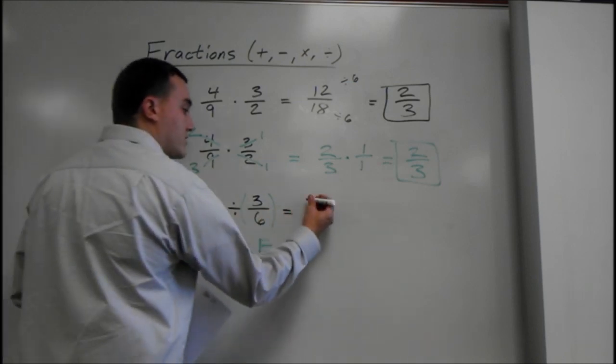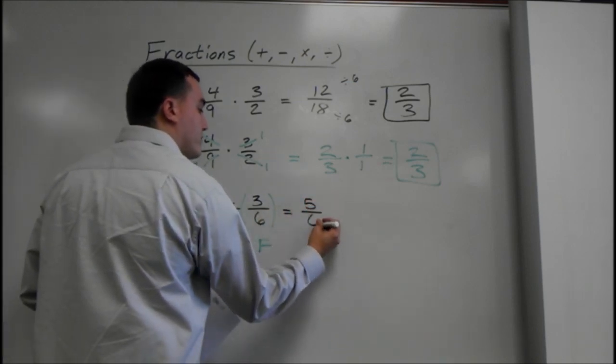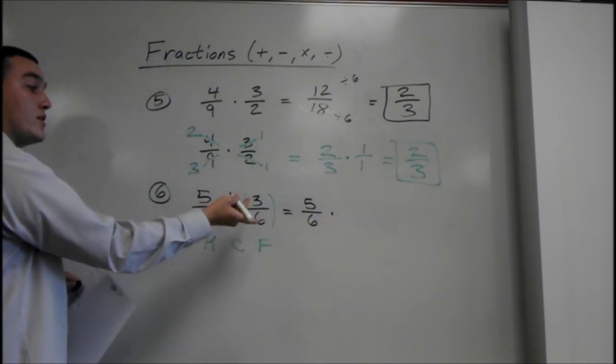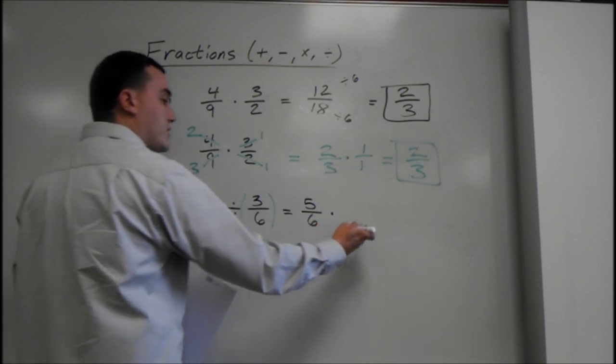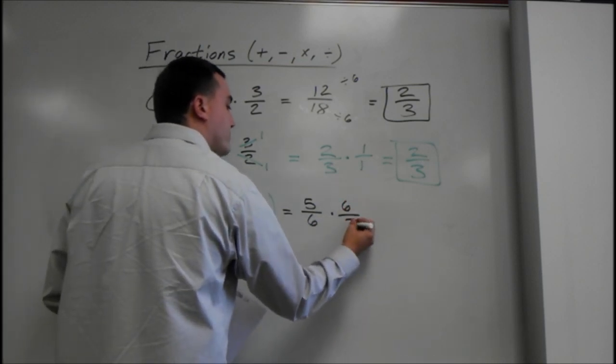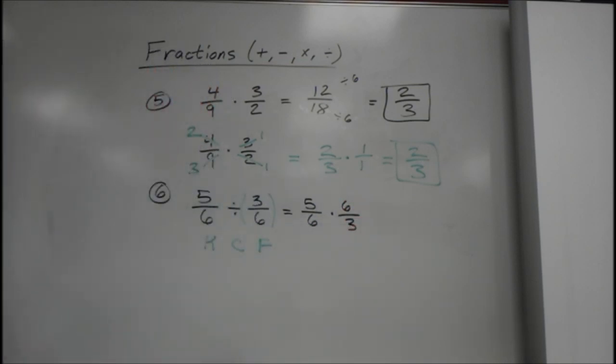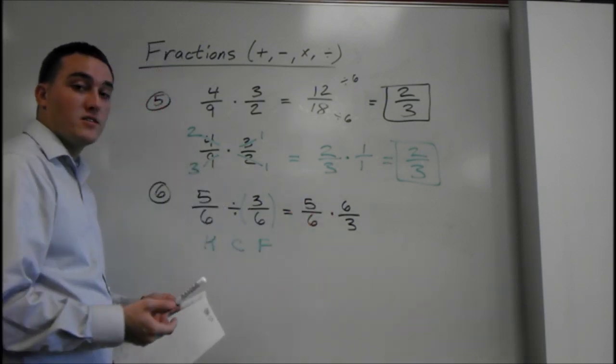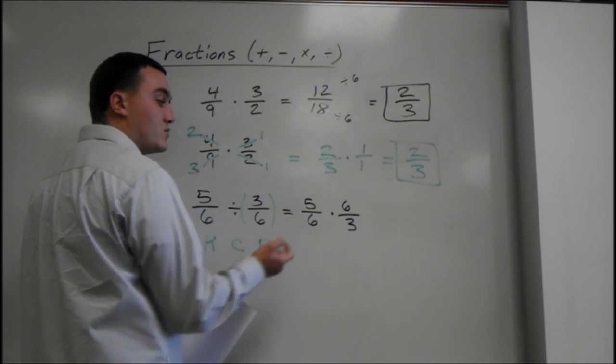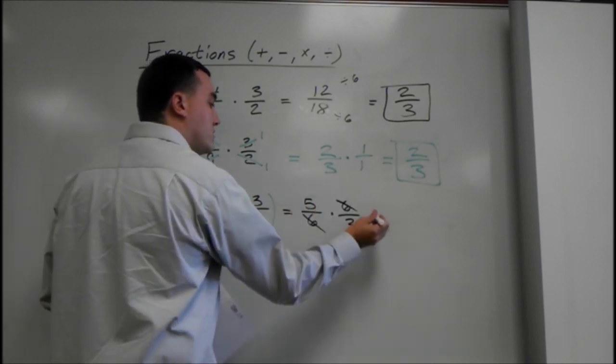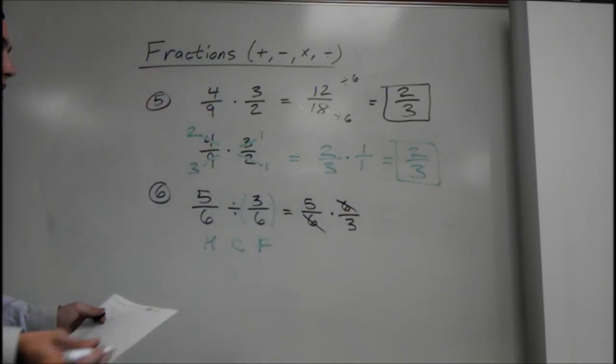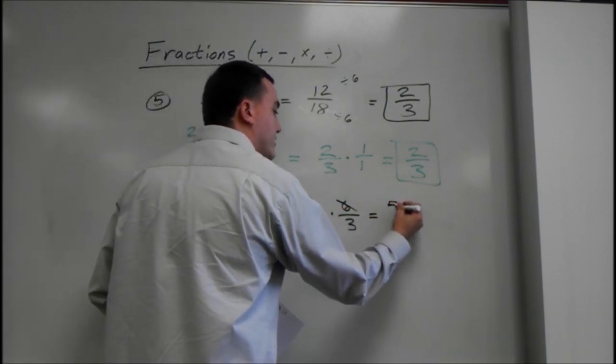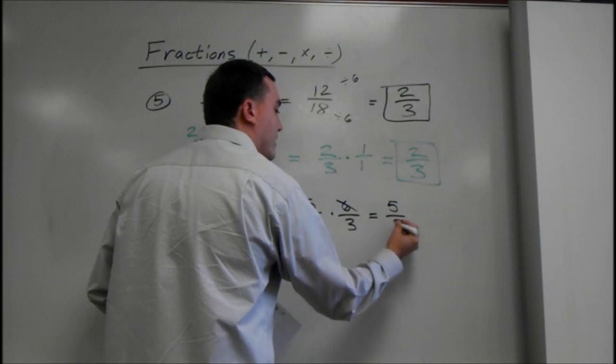So, we keep the first. 5 over 6 stays the same. Change the sign to multiply. And we flip the last, or multiply by the reciprocal. Another trick in math is, when you have the same number on the top and the bottom, they cancel out. Because 6 divided by 6 is 1. And 1 kind of just absorbs into the equation. So, 5 times 1 is still going to be 5. It's not changing anything. So, this is just going to turn into 5 over 3.